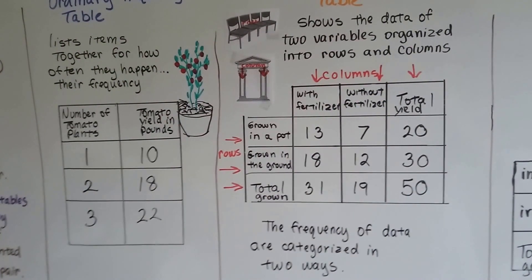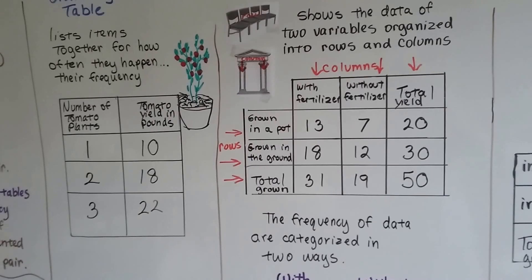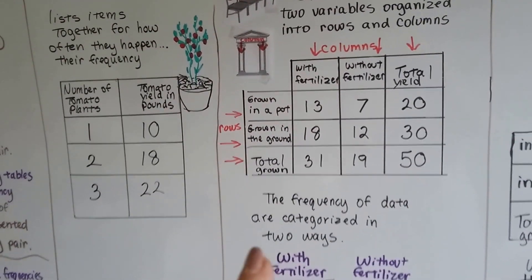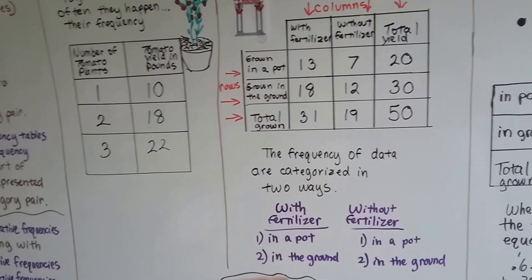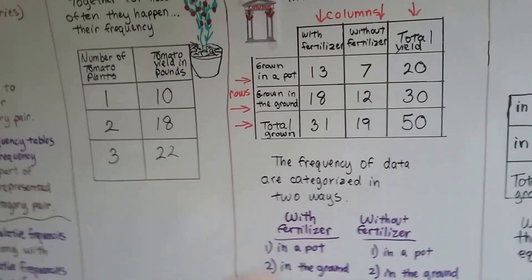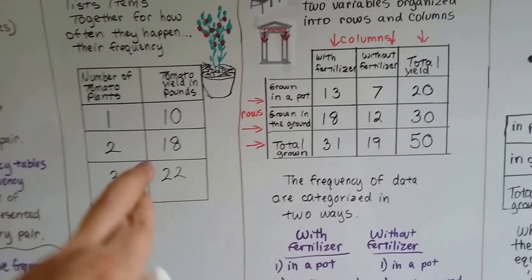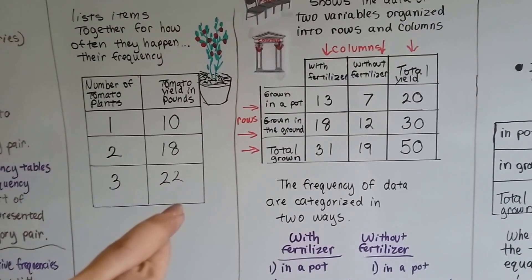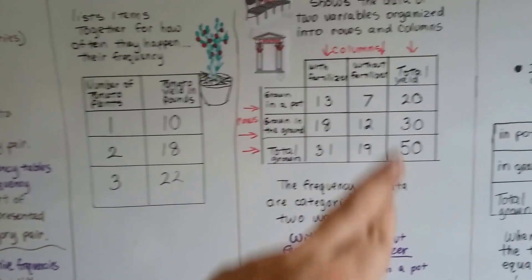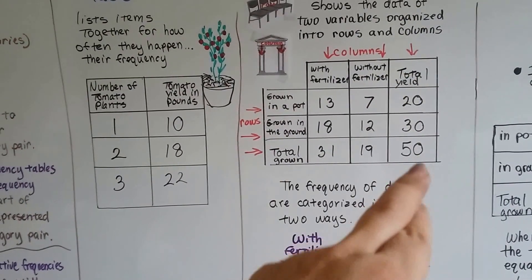So you see how it's a little more detailed and we're comparing more? So the frequency of data are categorized in two ways, with and without fertilizer in a pot or in the ground. And then we can see there were 10 and 18 and 22. That equals 50 plants, I mean 50 pounds. And that's what this is, it's 50 pounds.